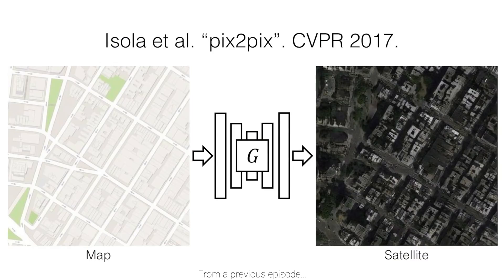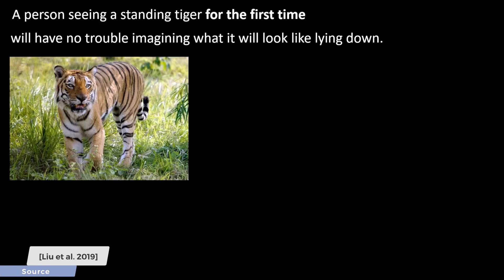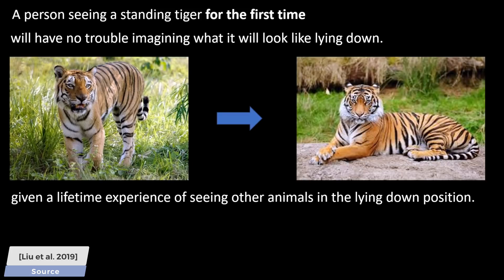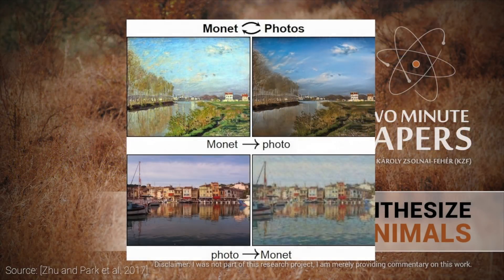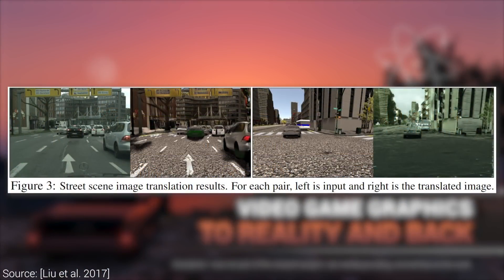Let's talk about a great recent development in image translation. Image translation means that some image goes in and it is translated into an analogous image of a different class. A good example of this would be when we have a standing tiger as an input, and we ask the algorithm to translate this image into the same tiger lying down. This leads to many amazing applications — for instance, we can specify a daytime image and get the same scene during nighttime. We can go from maps to satellite images, from video games to reality, and more.